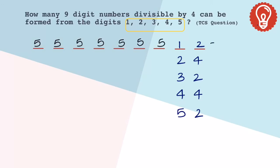This means there are 5 power 7 numbers possible ending with 12. Similarly, there are 5 power 7 numbers possible ending with 24, 5 power 7 numbers possible ending with 32, 44, and 52—there are another 5 power 7 numbers possible. Now to find the total numbers, we need to add all of these.